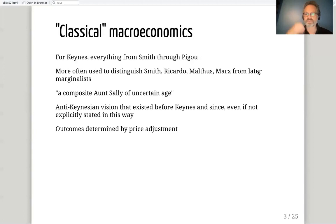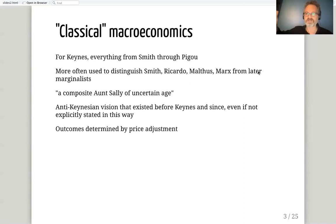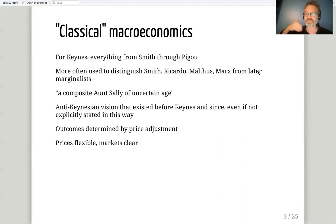The critical thing underlying this model is that price adjustment is seen as the central factor determining outcomes in the economy. You have some underlying schedule — supply, demand, production conditions — and which outcome you get depends on the adjustment of some price. Prices are flexible; they quickly move to where they need to be, markets clear, and people's behavior responds appropriately to the price. Consistency of plans across different units in the economy is maintained by price adjustments.